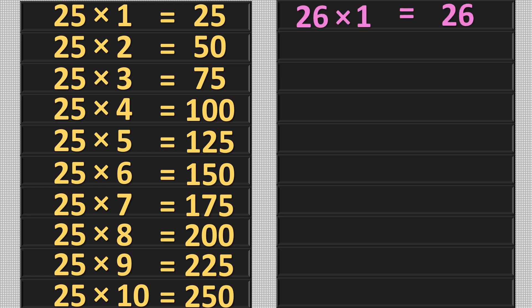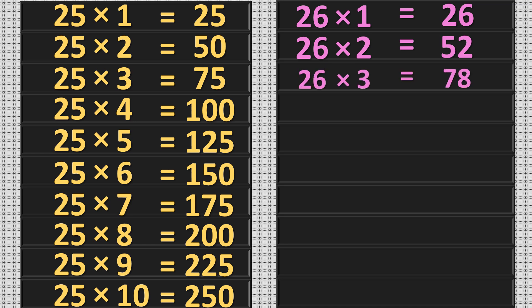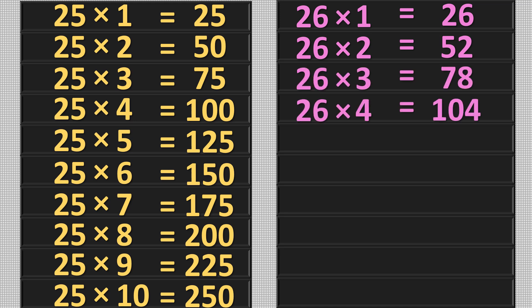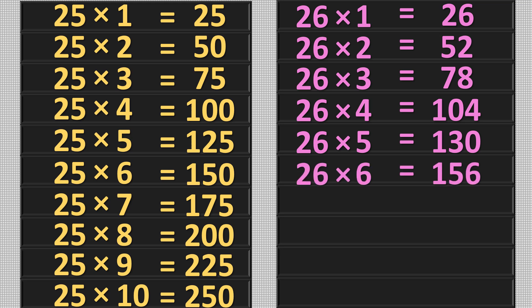26 ones are 26, 26 twos are 52, 26 threes are 78, 26 fours are 104, 26 fives are 130, 26 six are 156.